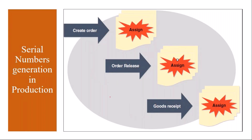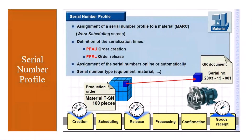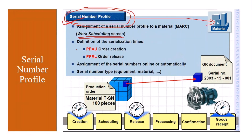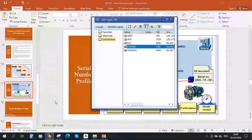You can assign serial numbers during any one of these three stages: creation of the production order, release of the production order, or goods receipt. We will see the serial number profile configuration later. First, let's go to the system and see the front-end part. Now let's log into the system.